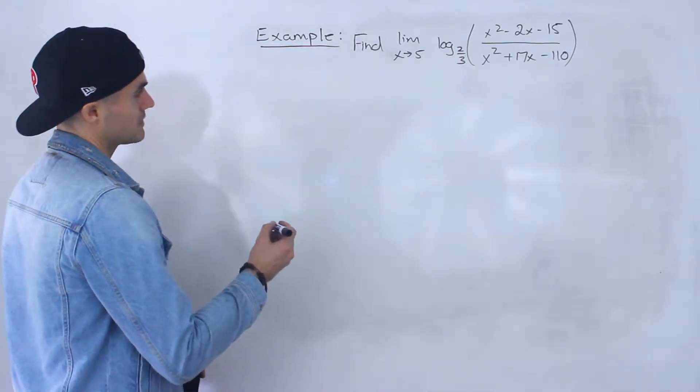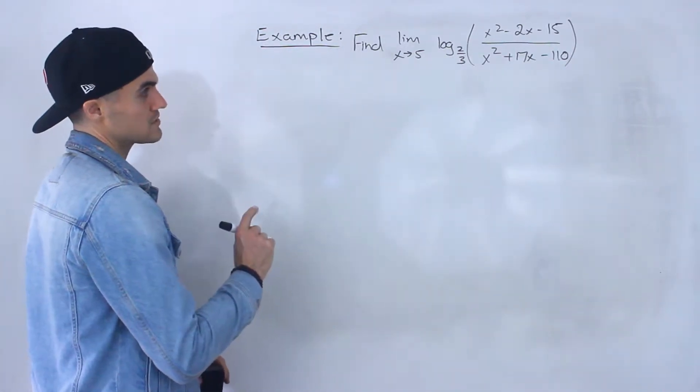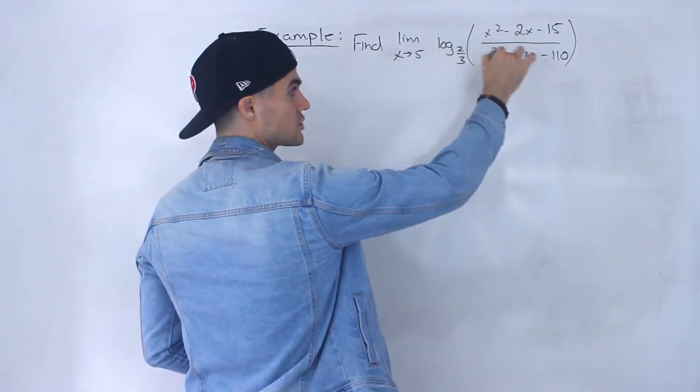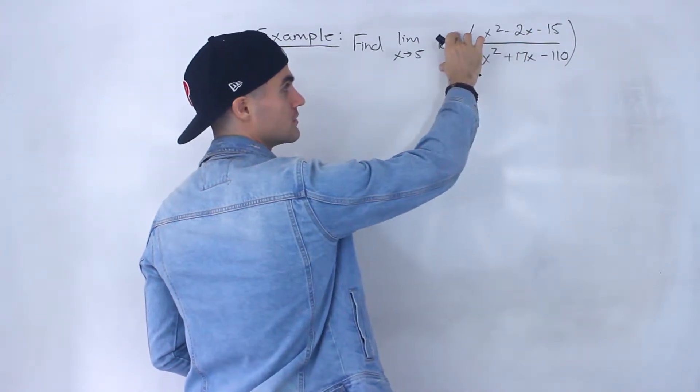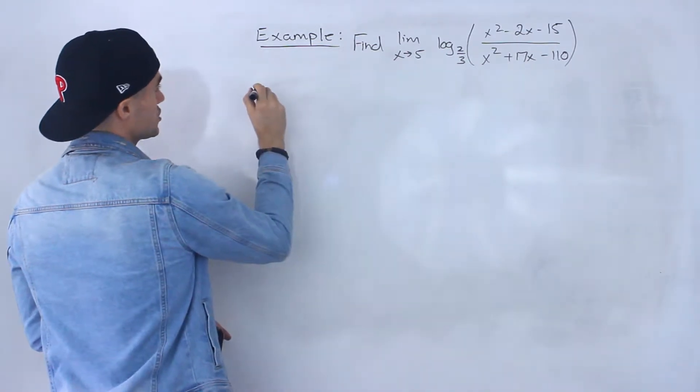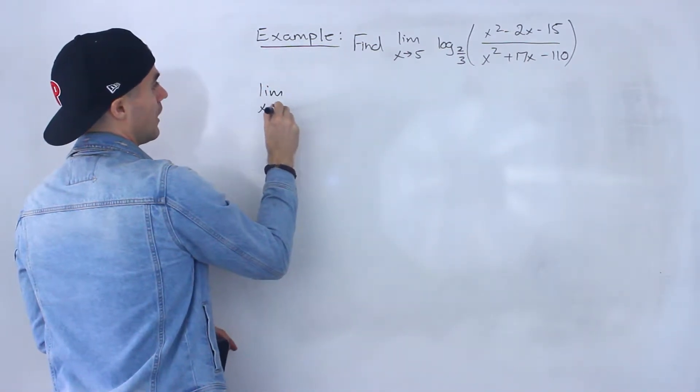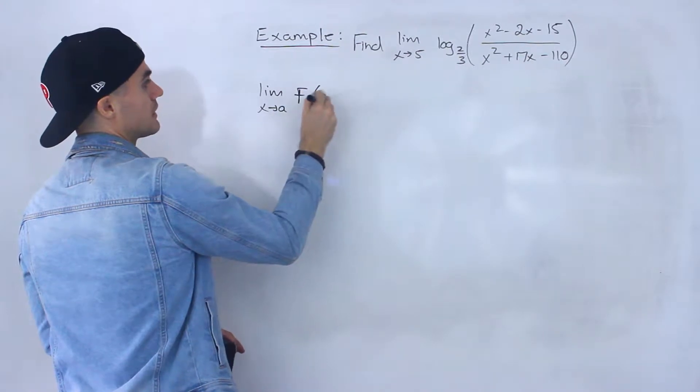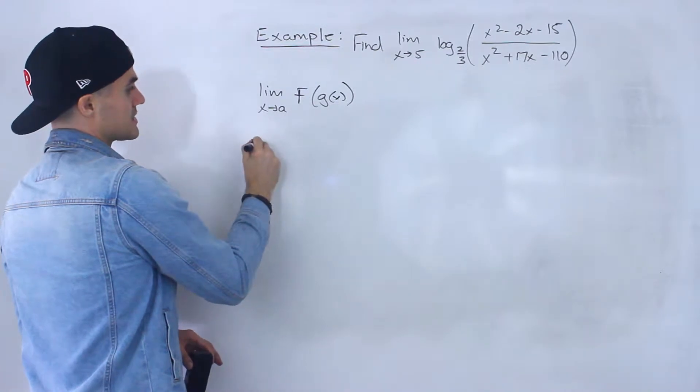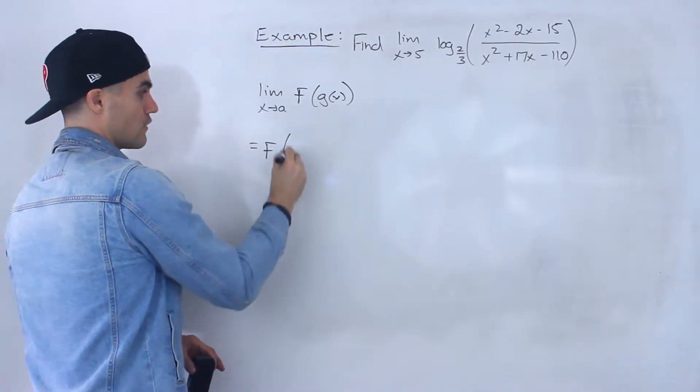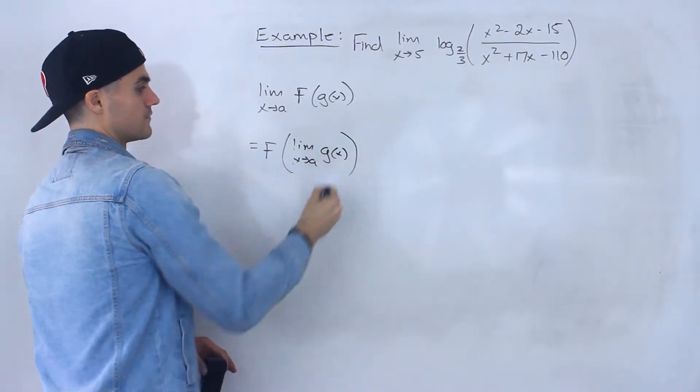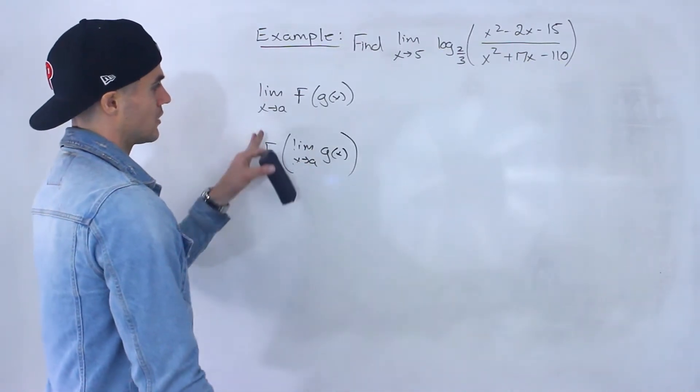And what I'm going to do here is I'm actually going to use the properties of limits to start off because notice that this is a composite function. We have a rational function here within a log function. So the log function is on the outside. And so just in general, if you're dealing with a limit of a composite function like this, basically this here is equal to f of the limit as x approaches a of that function inside.